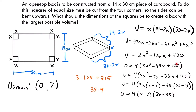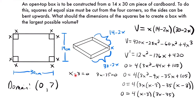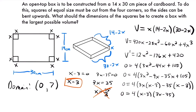Setting each factor equal to zero: x minus 3 = 0 gives x = 3, and 3x minus 35 = 0 gives x = 35/3, which is approximately 11.66. Since our domain is (0, 7), x = 35/3 is outside the domain and must be ruled out. So our answer is x = 3.